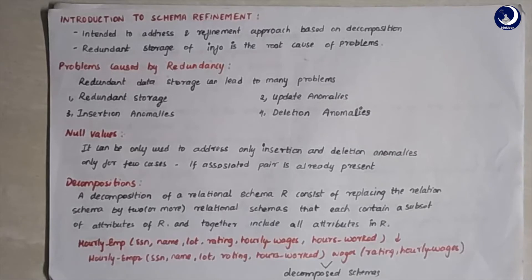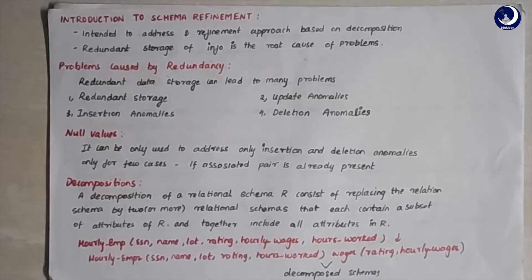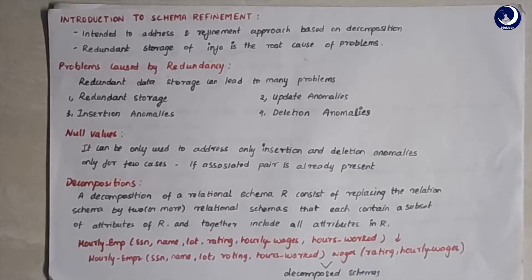Schema refinement is the fourth step in database design where we analyze the collection of tables formed from the relational schema, try to find potential problems, and refine the schema to address them. The main approach used in schema refinement is decomposition — the process of dividing a single large table into a smaller set of tables so as to reduce redundancy.